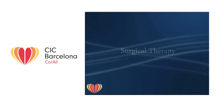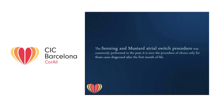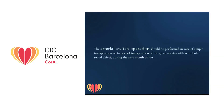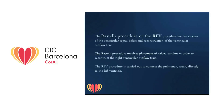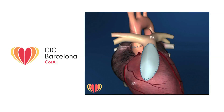Three different surgical techniques may be performed. The Senning and Mustard atrial switch procedure was commonly performed in the past and is now the procedure of choice only for cases diagnosed after the first month of life. The arterial switch operation is performed for simple transposition or TGA with ventricular septal defect during the first month of life. The Rastelli or REV procedure involves closure of the ventricular septal defect and reconstruction of the ventricular outflow tract, with the REV procedure connecting the pulmonary artery directly to the left ventricle.